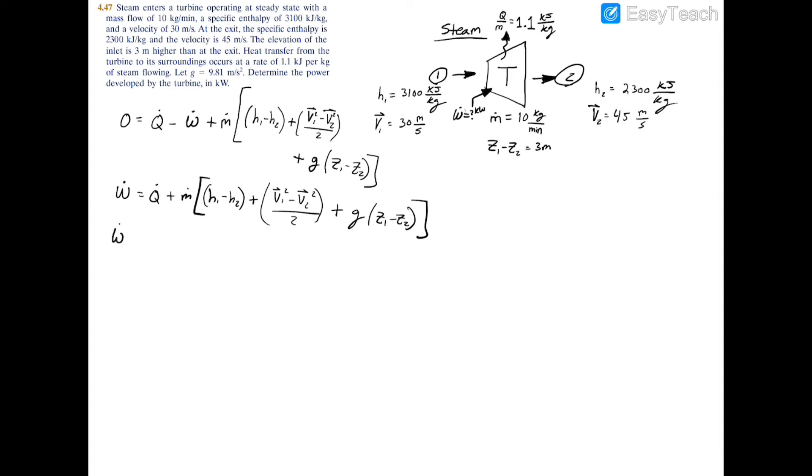Now that we have our equation rearranged for the power, we can finally solve. W dot equals the heat transfer, so the heat transfer was 1.1 kilojoules per kilogram. If you multiply kilojoules per kilogram by the mass flow rate of kilograms per minute, you should have your heat transfer on a per unit time basis. We probably want to replace this unit with kilograms per second, so divide by 60 to get one sixth kilograms per second.